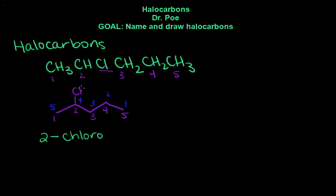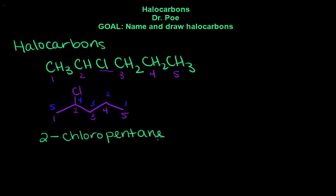So we have 2-chloro. Then you name the longest chain. Because this is really an alkane with a halogen on it, we use alkane naming — five carbons is 'pent', with an '-ane' ending. The answer here is 2-chloropentane.